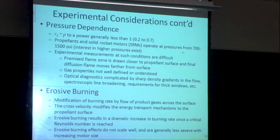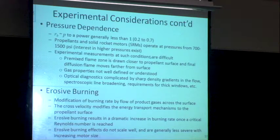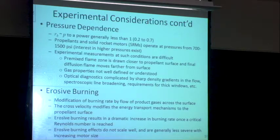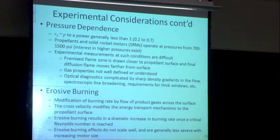Experimental measurements under these conditions are very difficult. As pressure goes up, the flame structure is a multi-zone structure with a primary flame, secondary flame, and these flames move very close to the surface — probably within tens to hundreds of microns. The ability to do diagnostics on that at pressure is almost impossible. The surface, if it's a composite propellant, is not always uniform — the oxidizer particles are on the order of hundreds of microns, the same thickness as the flame structure itself.